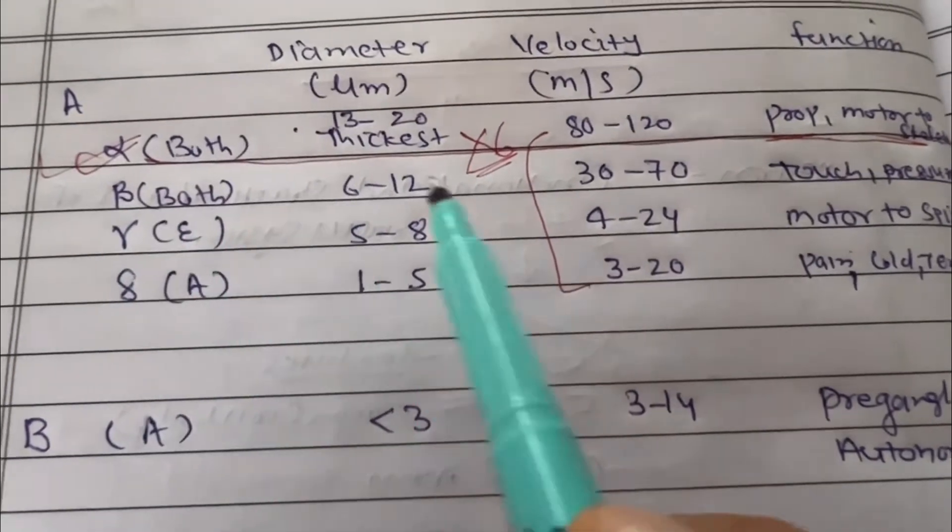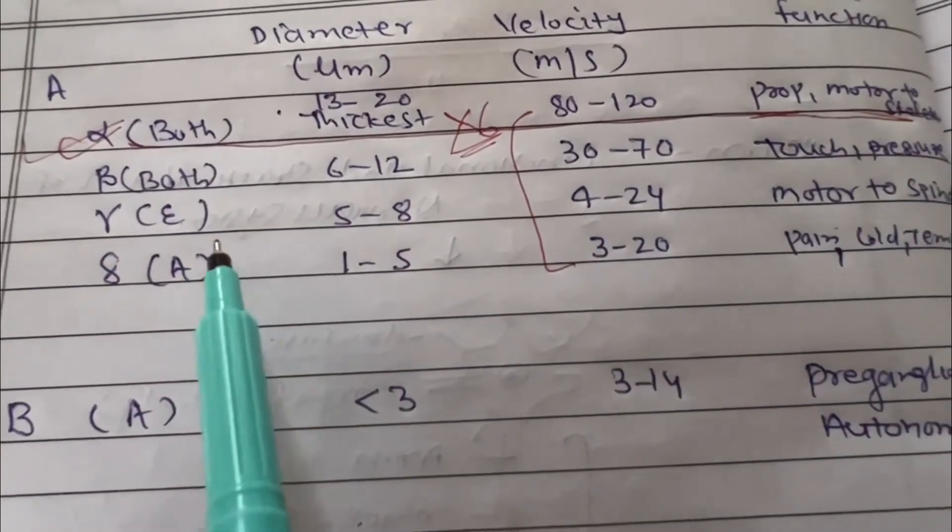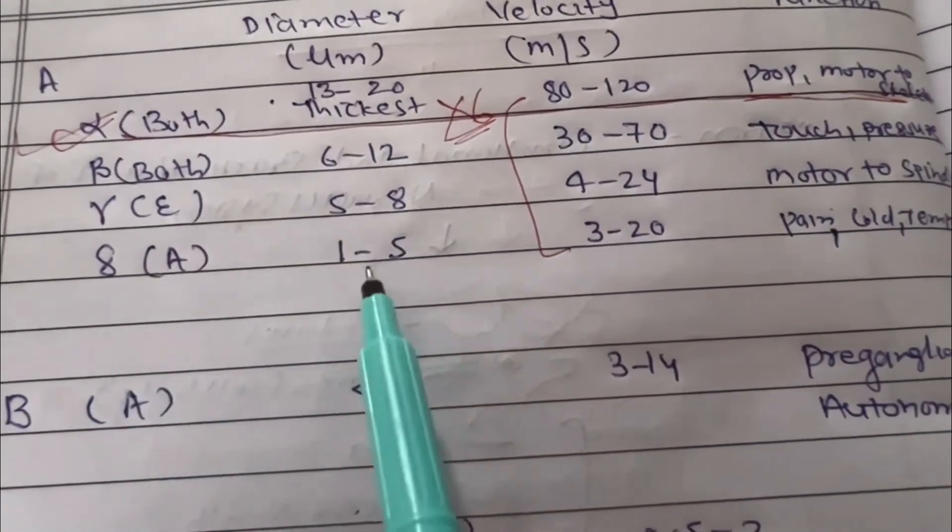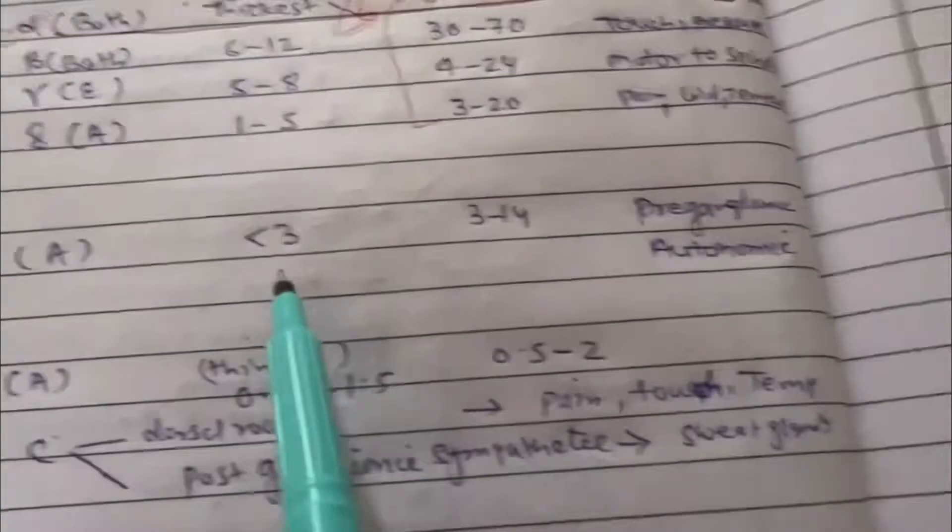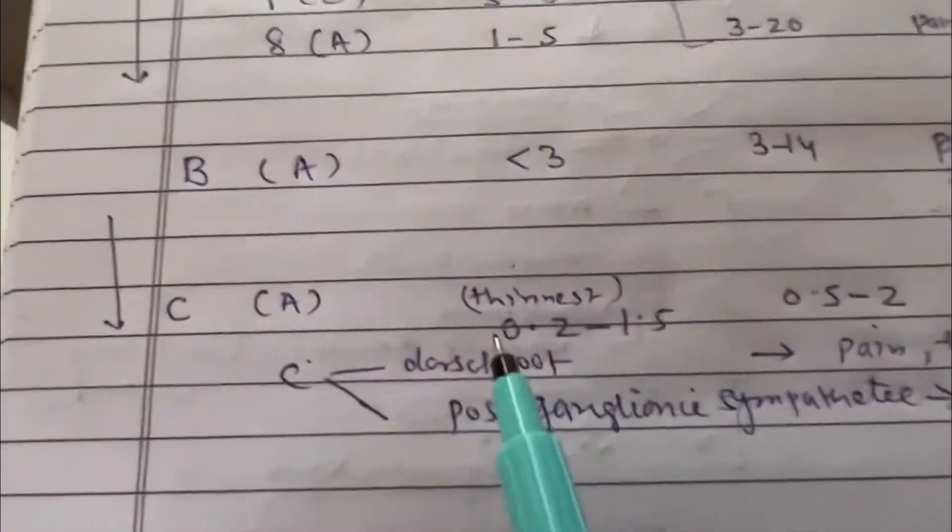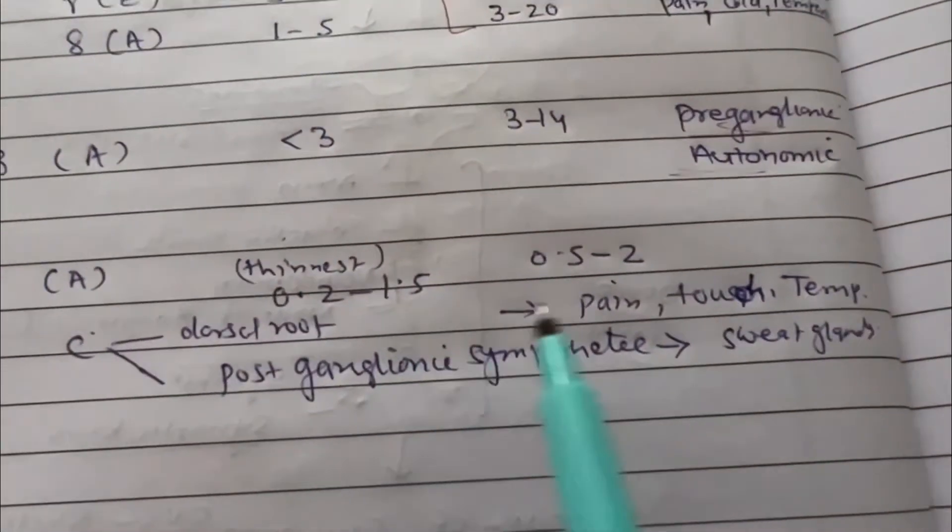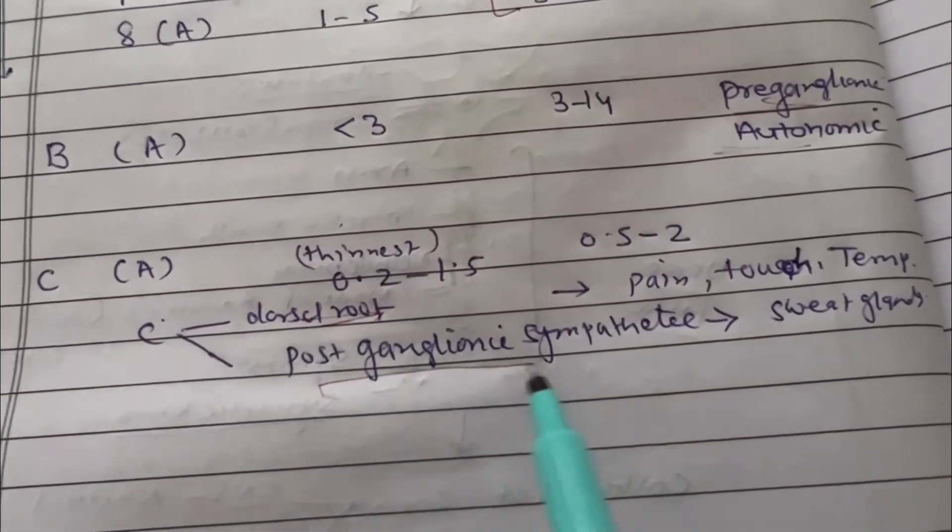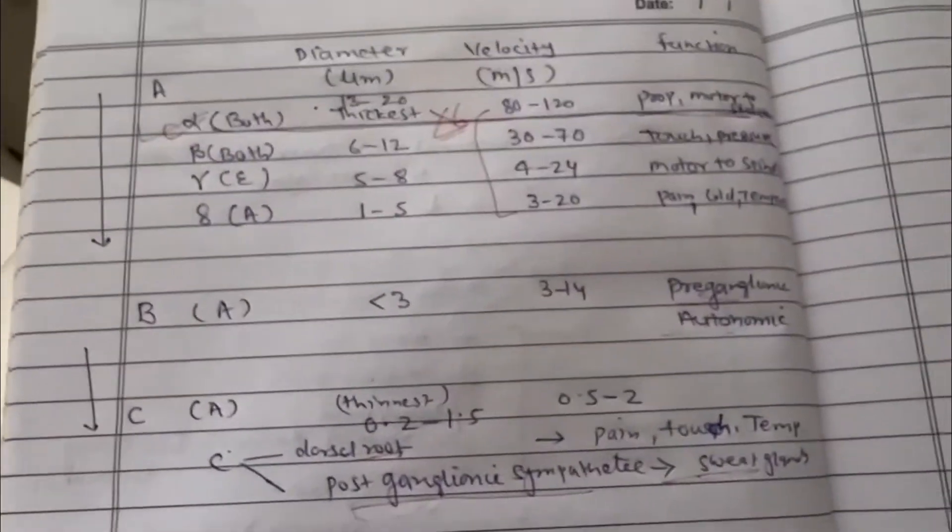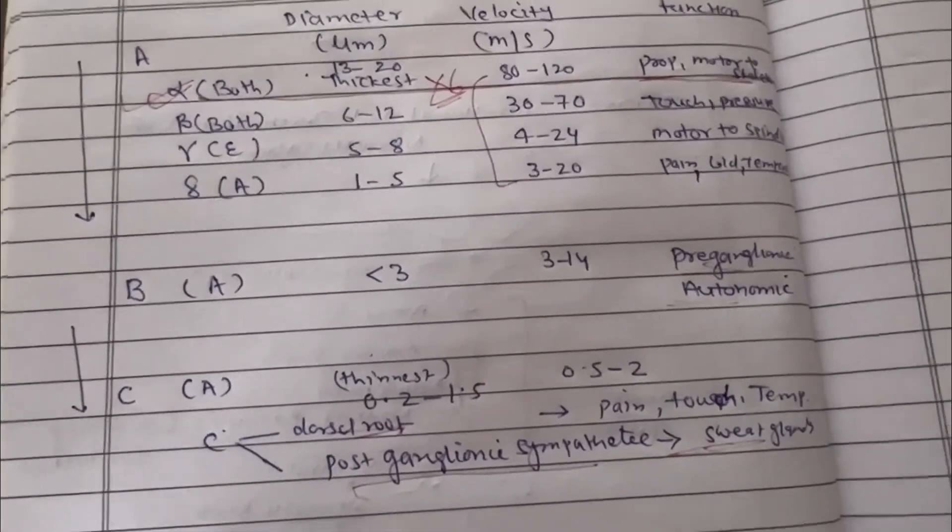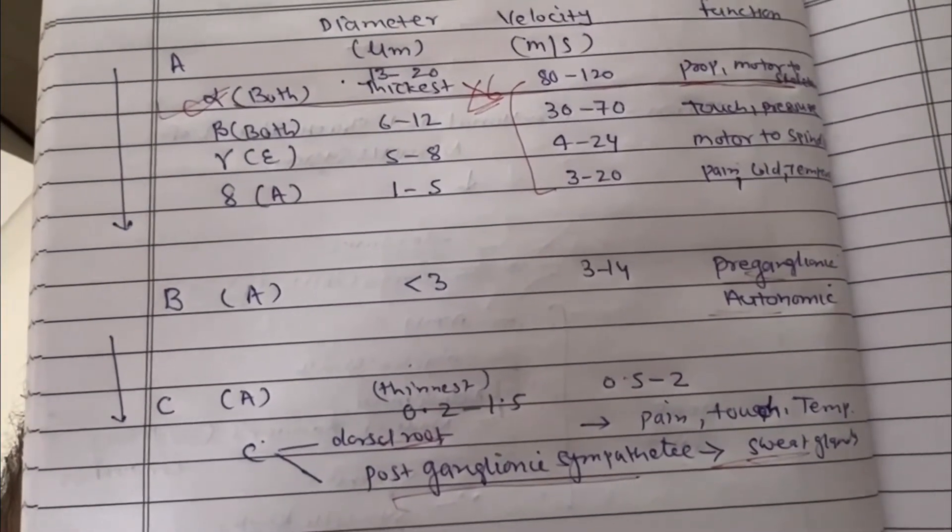Now A-beta is both having efferent, mainly touch and pressure. Gamma for efferent motor to spindle fibers, and A-delta for pain and temperature. B fiber is mainly for preganglionic autonomic functions like salivation, and C type fiber is thinnest which is mainly pain, touch, temperature, mainly dorsal root type, and postganglionic sympathetic mainly for sweat glands. So this is very helpful and fundamental behind the anastomosis. This is all about nerve fibers for ENT guys. Thank you so much.